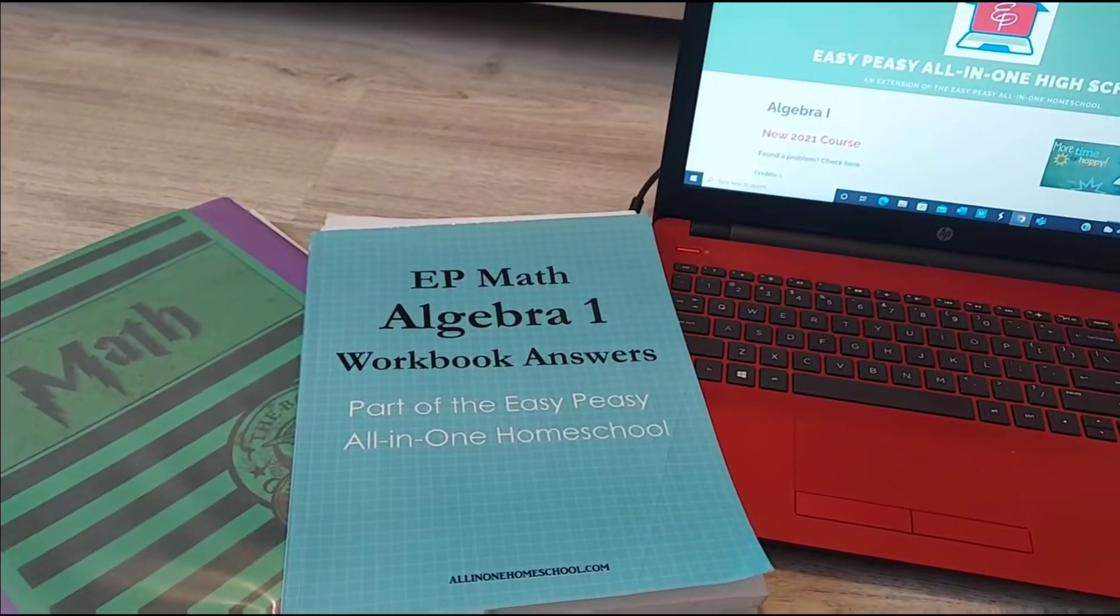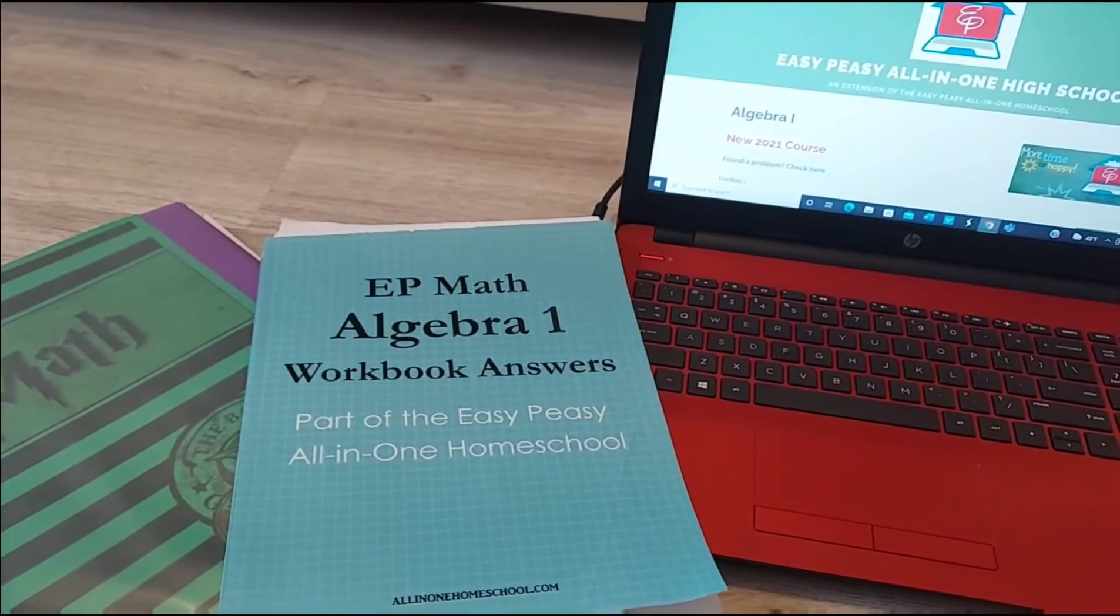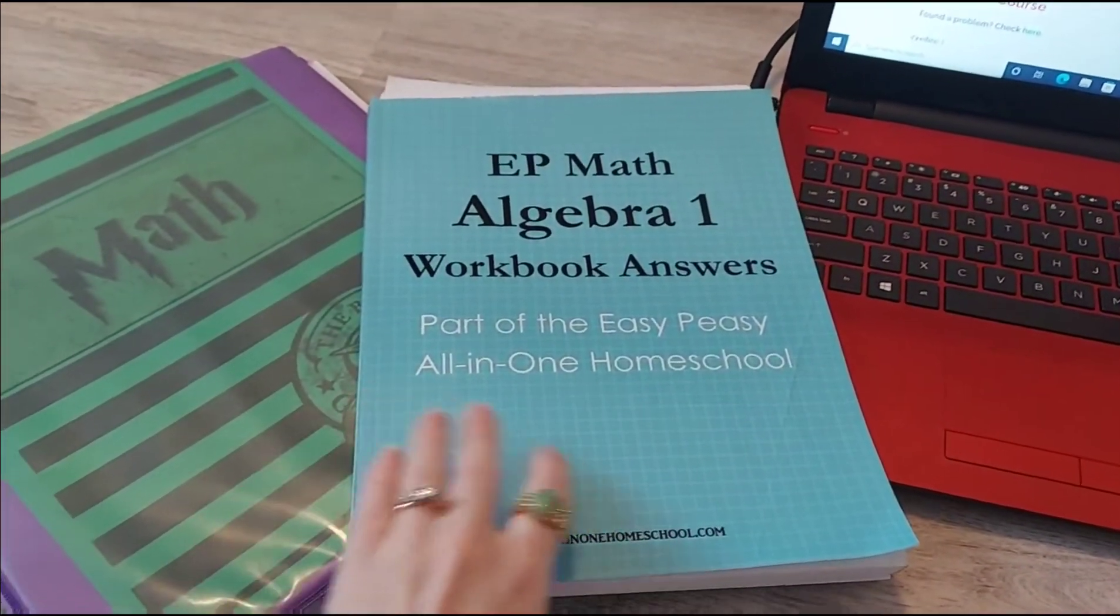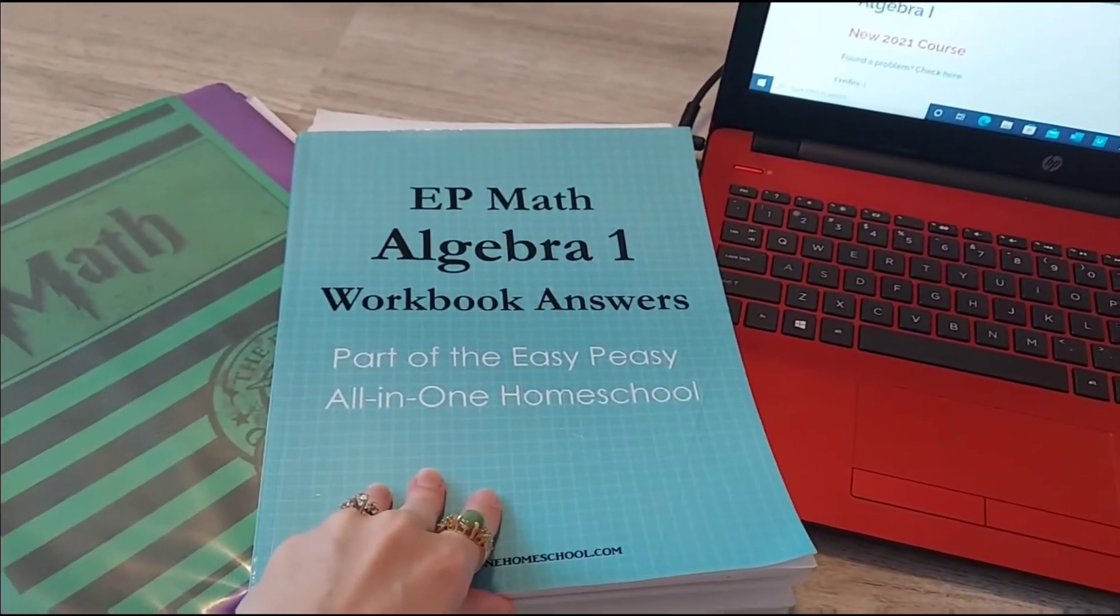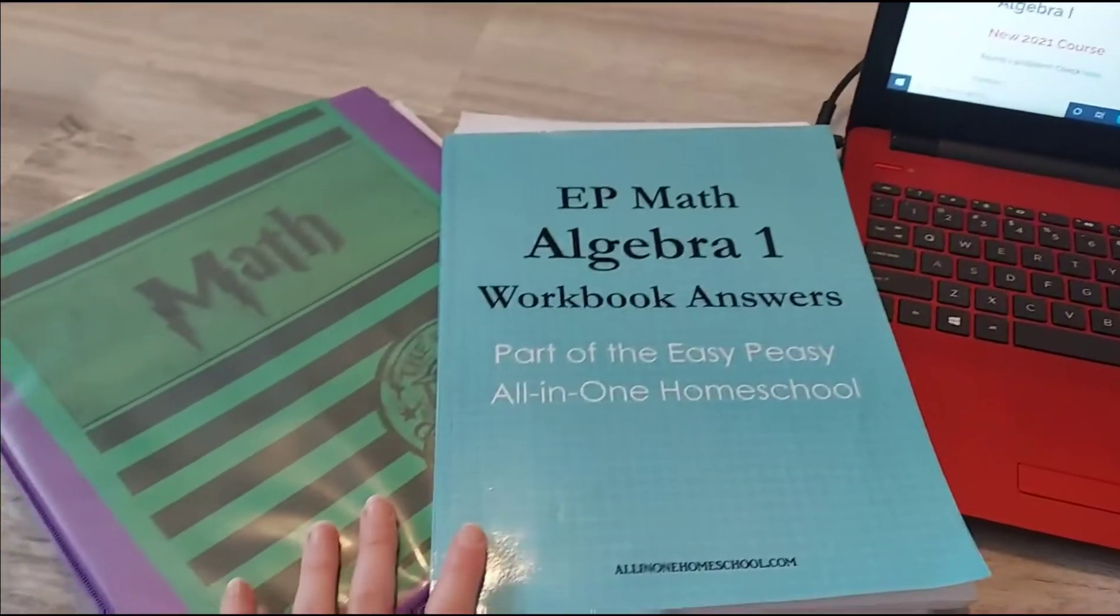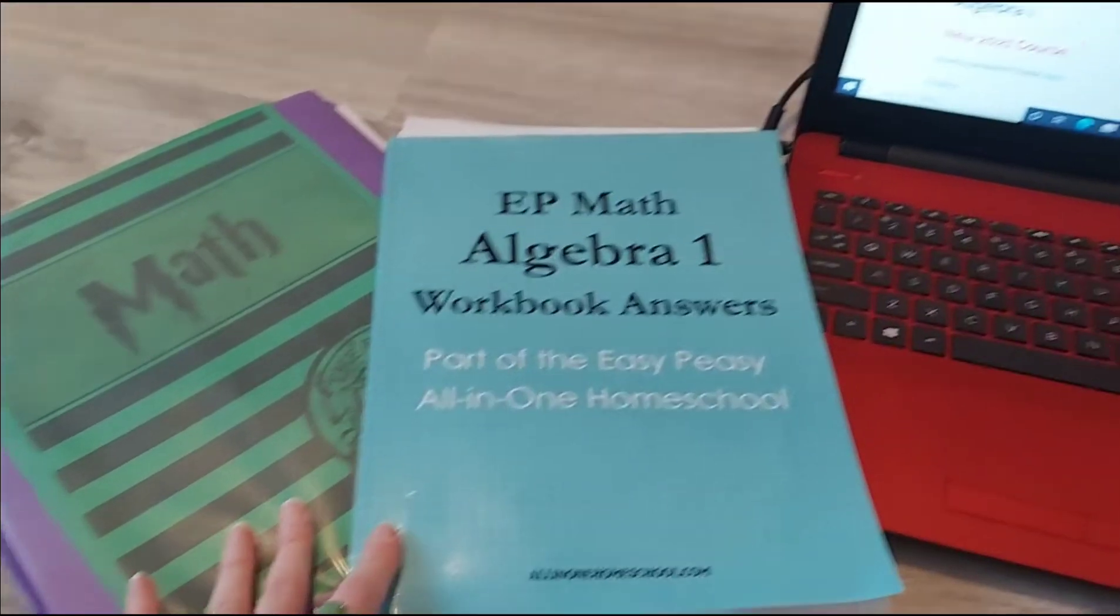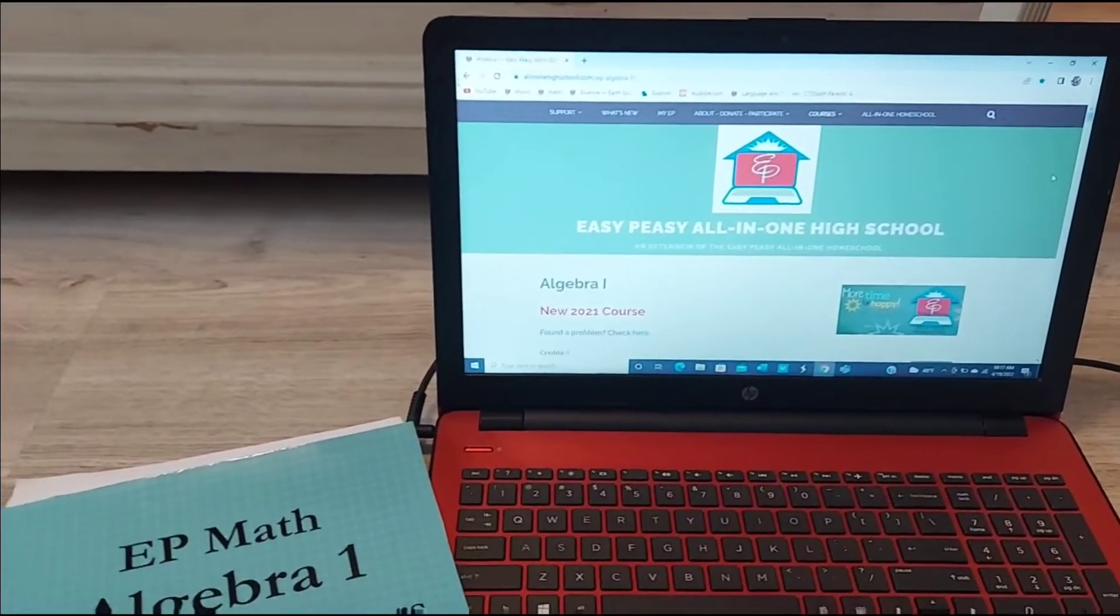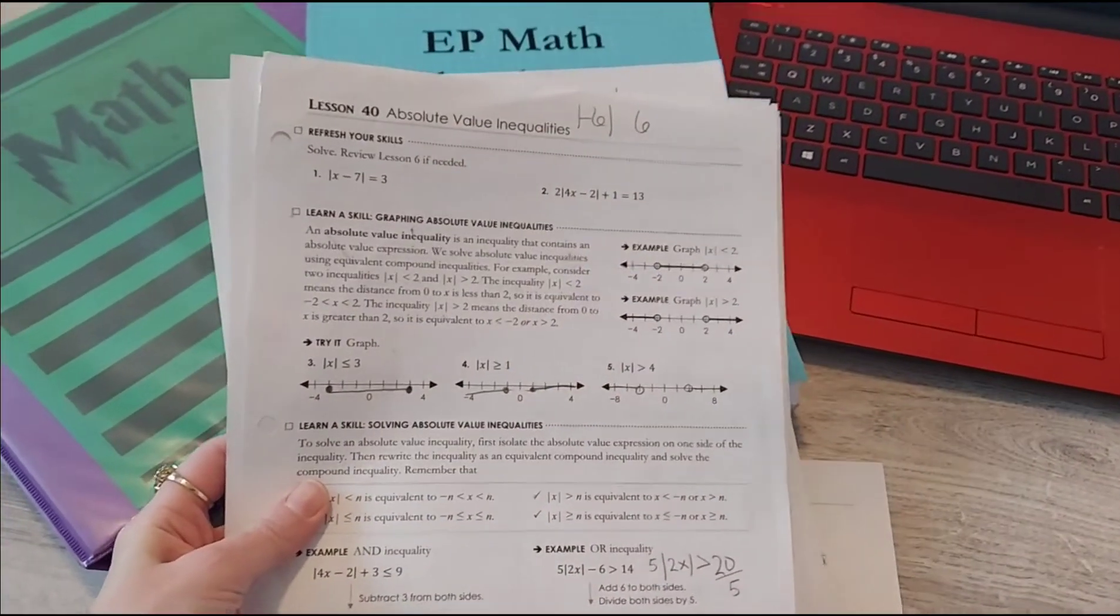The Easy Peasy Algebra 1 has two different ways that you can teach your child. There is an online and there's also an offline with workbook and we do a hybrid of both. I will sometimes do the online activity and I will sometimes do the offline activity. Most often if there's like a lecture or an online lesson we'll do that and then we'll move into the worksheet and he'll do that offline.